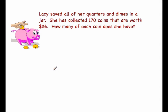Welcome back. The last type of word problem I'd like for us to look at is what I call the coin problem. This can be done with nickels, dimes, quarters, any type of coin. In this case we're looking at just two types of coins. Lacey saved all of her quarters and her dimes in a jar. She has collected 170 coins that are worth $26. We want to know how many of each coin she has.